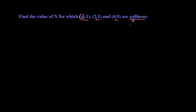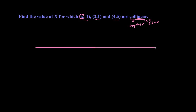First, let's understand what collinear means. 'Co' means together, and 'linear' means line — so together in a line. Points which are together on a line are called collinear points. Let me draw a line to illustrate this.